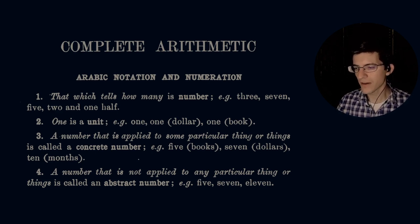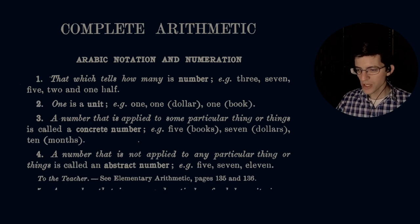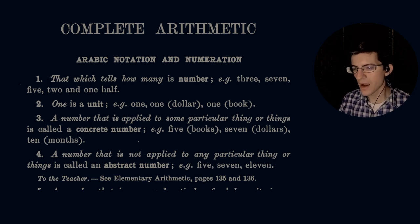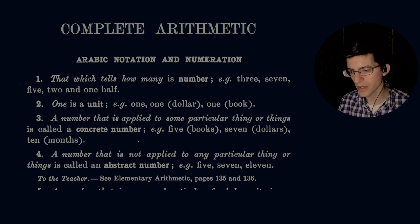Complete Arithmetic, Arabic Notation and Numeration. Number one: that which tells how many is number, e.g. 3, 7, 5, 2, and 1 half. Each of these, if it's a quantifier, then it is a number. Two: one is a unit, e.g. $1, one book, just the number itself. One is a unit.